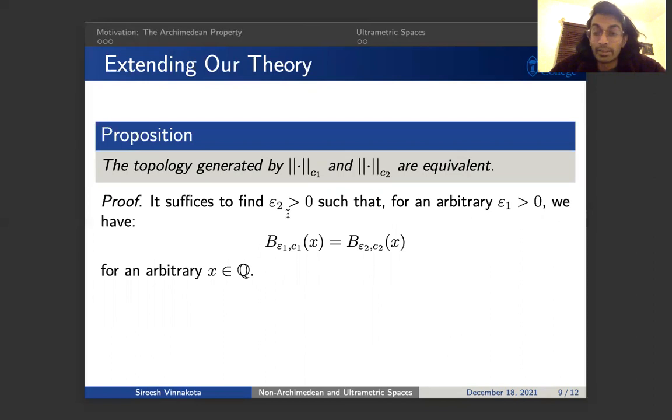So let's just get rid of it and say that the topology generated, if we were to consider open balls or unions of open balls as our open sets, the topology generated by these two metrics is actually equivalent.